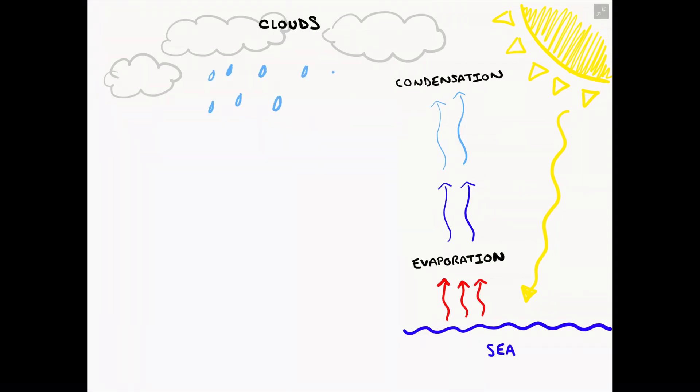When these clouds get large enough and the water vapor becomes too much for the clouds to hold, the cloud will eventually give out precipitation. Precipitation can be in the form of rain, hail, sleet, or even snow.